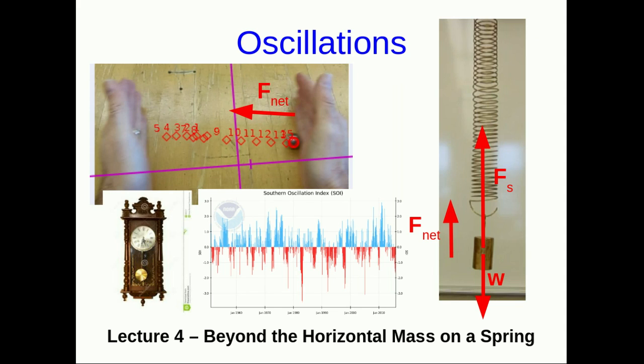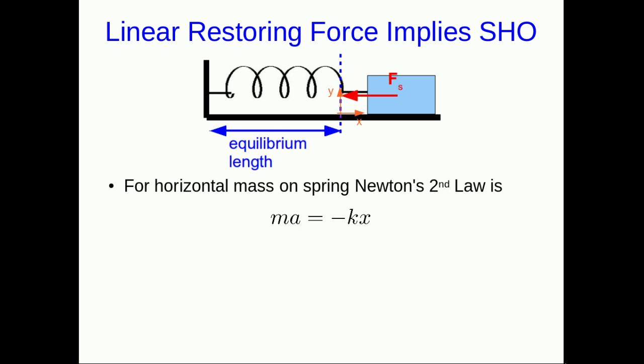Hello and welcome to lecture four of oscillations in PHYS 1201. We're going to finish off by looking at some examples of simple harmonic oscillations other than a horizontal mass on a spring. To assess whether something will execute simple harmonic motion, we need to look at whether it's similar to a mass on a spring. One defining feature is the linear restoring force: Newton's second law says ma = -kx, where the negative means it's restoring and x is to the power of one, so it's linear.